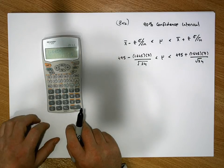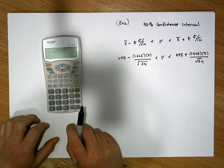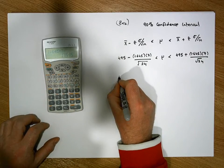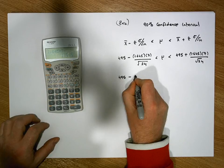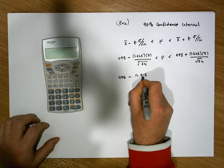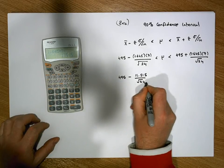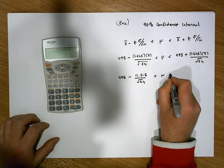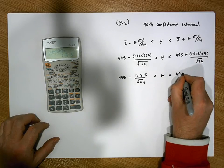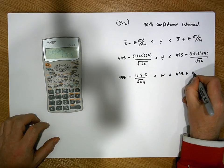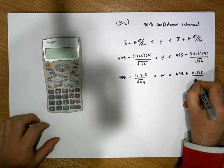gives us a value of 11.515. So this becomes 495 minus 11.515 divided by the square root of 24, must be less than mu, must be less than 495 plus 11.515 divided by the square root of 24.